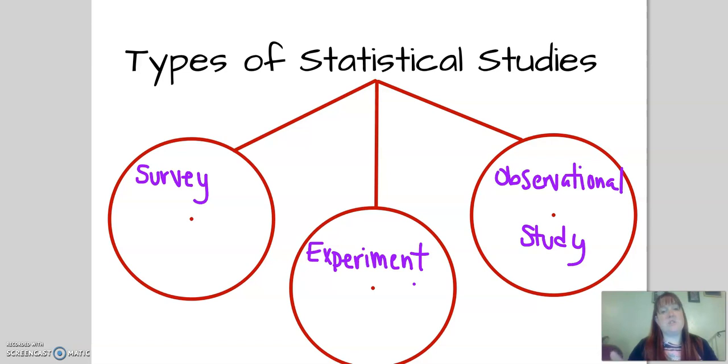The final kind is an observational study. An observational study is very much like an experiment where there are two groups and one is getting a treatment and one is not. The difference is you are not applying the treatment in an observational study. This is people who already chose to do that treatment themselves, and then you look at the results later.